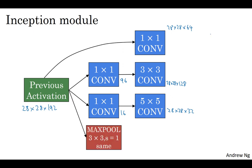And then finally is the pooling layer. So here we're going to do something funny. In order to really concatenate all of these outputs at the end, we are going to use the same type of padding for pooling so that the output height and width is still 28 by 28, so we can concatenate it with these other outputs. But notice that if you do max pooling, even with same padding, three by three filter, a stride of one, the output here will be 28 by 28 by 192.